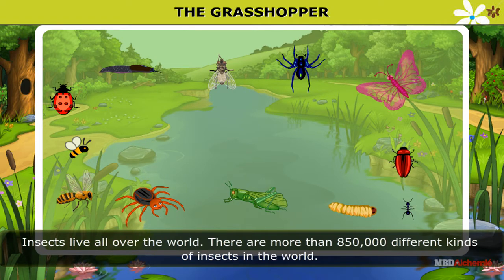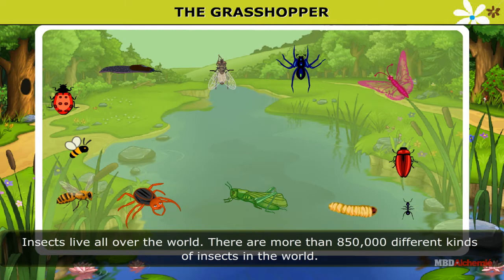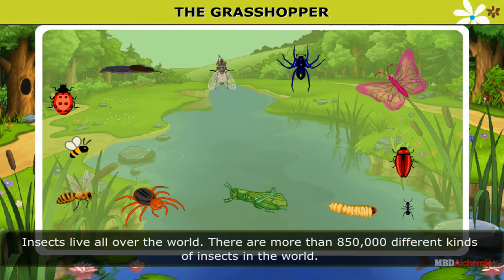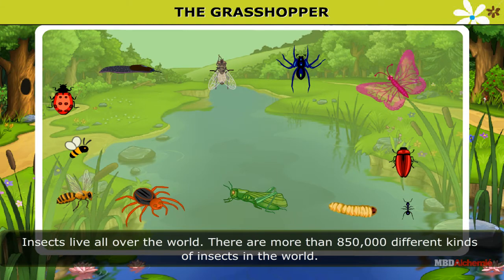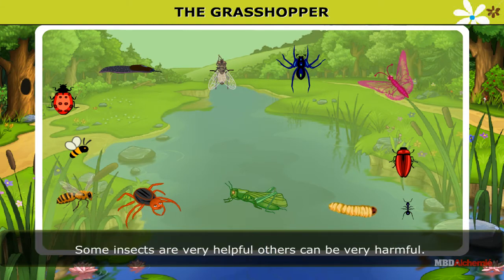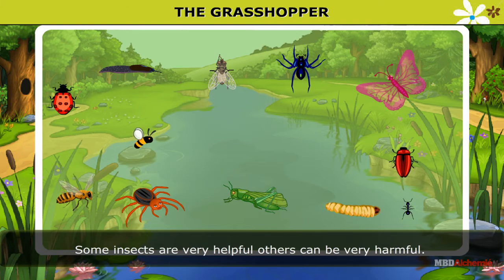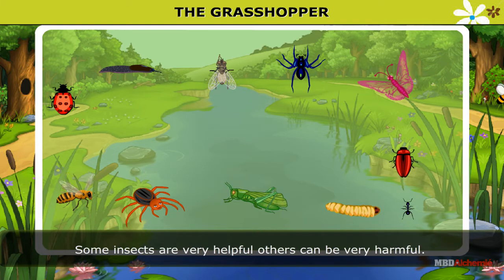Insects live all over the world. There are more than 8,50,000 different kinds of insects in the world. Some insects are very helpful. Others can be very harmful.